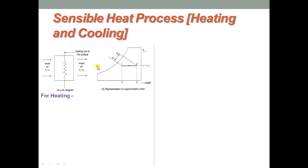For heating, we make use of a line diagram and psychrometric chart for better understanding. There is a heater or heating coil or a hot surface, and the air is made to flow over this hot surface. The initial condition of the air is T1 and omega 1, and the final condition after passing over the hot surface is T2 and omega 2. The process is represented as 1 to 2 in the horizontal direction on the psychrometric chart.